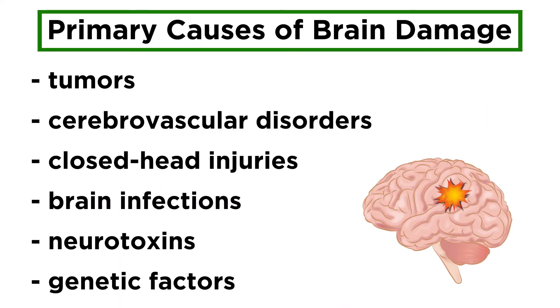The primary types of brain damage include tumors, cerebrovascular disorders, closed head injuries, brain infections, neurotoxins, and genetic factors.